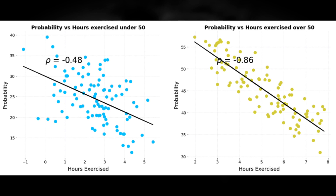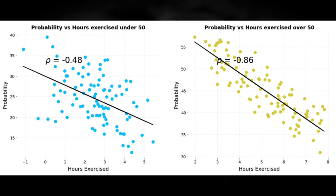Here's what happens when we stratify all that data over age. We have two groups: an under-50 group and an over-50 group. Now the correlation you saw earlier has completely reversed. It turns out age was a lurking variable here — older people, who are at higher risk of getting the disease in the first place, exercise for more hours than younger people do, hence causing the apparent correlation. In reality, both age groups, as they exercise more, appear to be at lower risk of the disease.